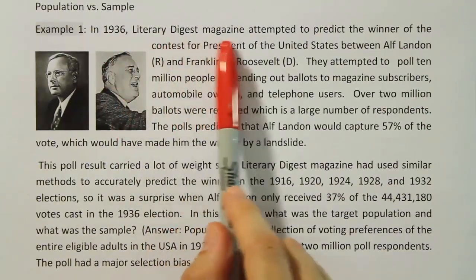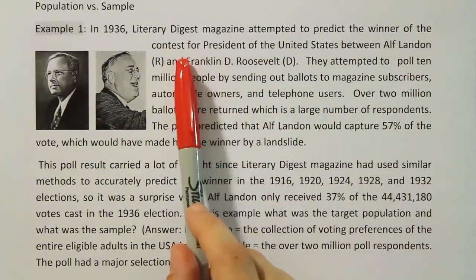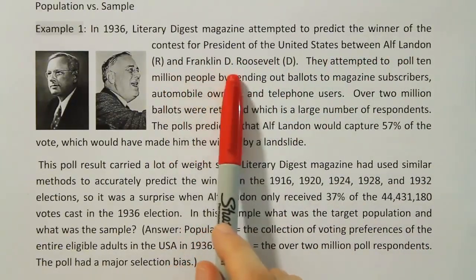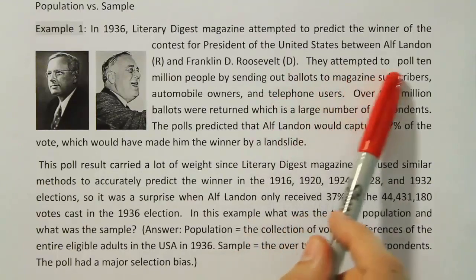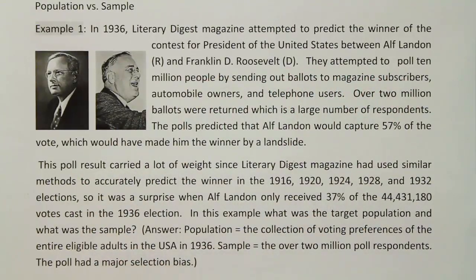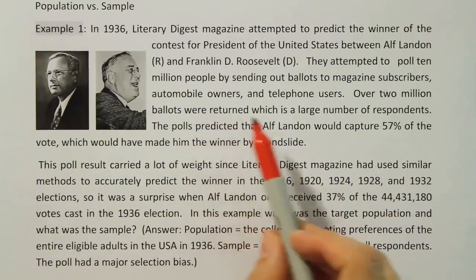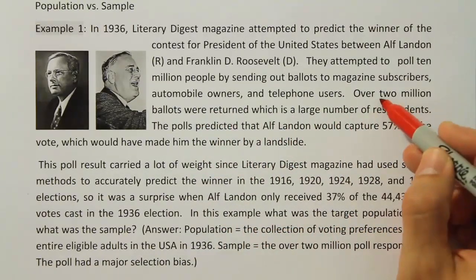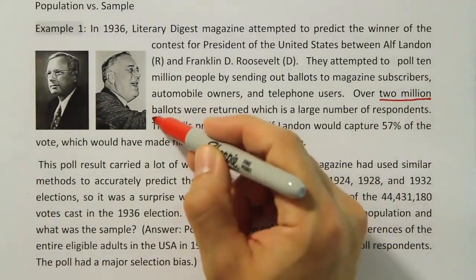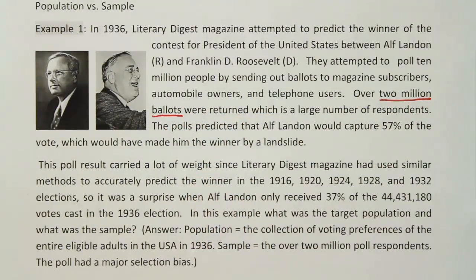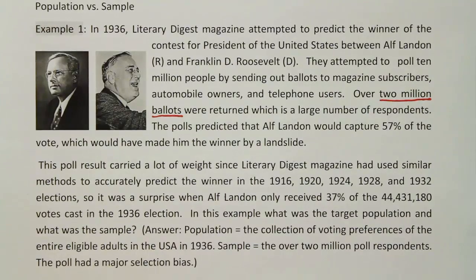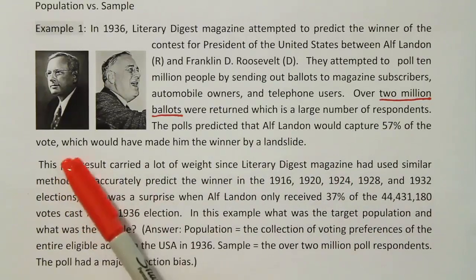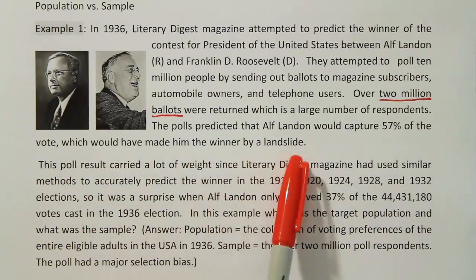In 1936, Literary Digest magazine attempted to predict the winner of the contest for president of the United States between Alf Landon, the Republican, and Franklin Delano Roosevelt, the Democrat. They attempted to poll 10 million people by sending out ballots to magazine subscribers, automobile owners, and telephone users. Over 2 million ballots were returned, and the polls predicted that Alf Landon would capture 57% of the vote, which would have made him the winner by a landslide.